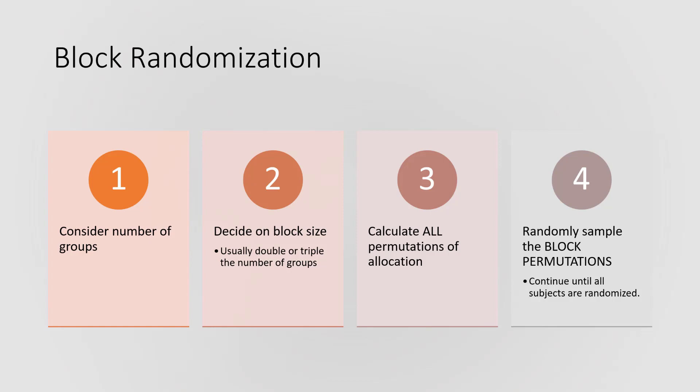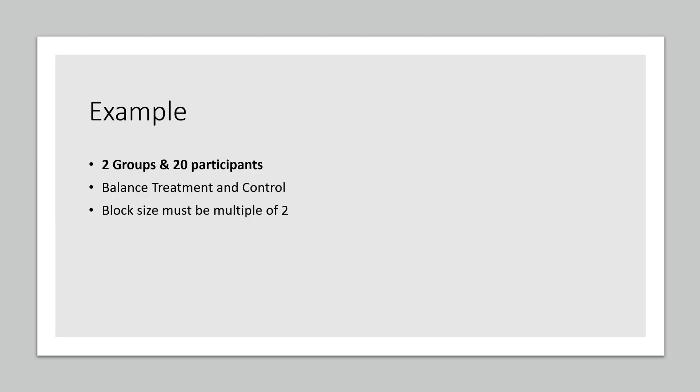Let's look at how that would work. Let's say we have two groups and 20 participants overall, and we want to balance the number of participants in the treatment and control group. Therefore, the block size must be a multiple of two. In this case, we'll choose four.